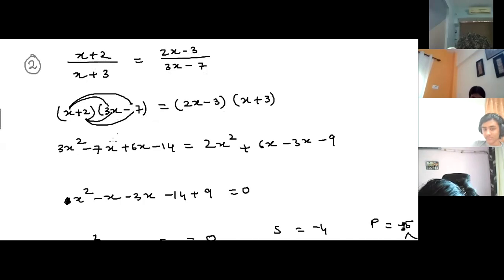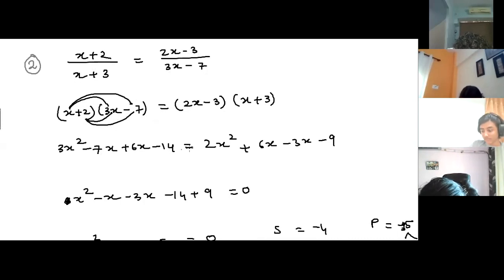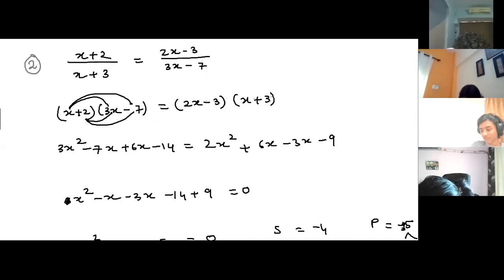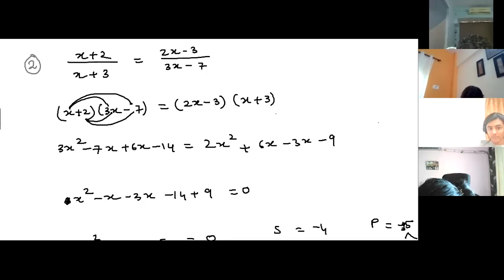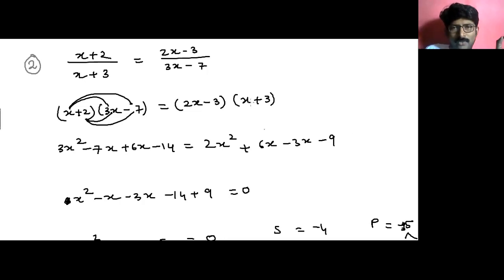Continuing the expansion on the left: x times minus 7 gives minus 7x, plus 2 times 3x gives plus 6x, and 2 times minus 7 gives minus 14. On the right side: 2x times x gives 2x squared, 2x times 3 gives 6x, minus 3 times x gives minus 3x, and minus 3 times positive 3 gives minus 9.